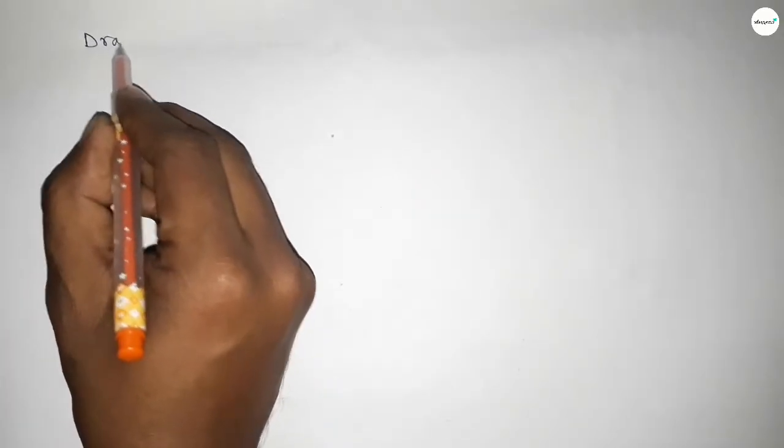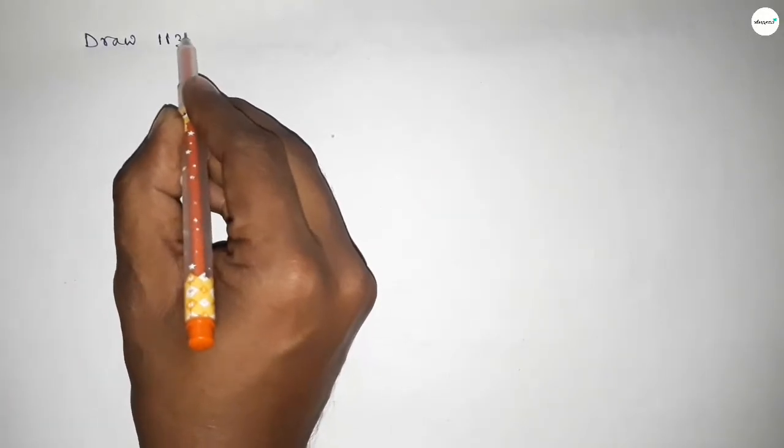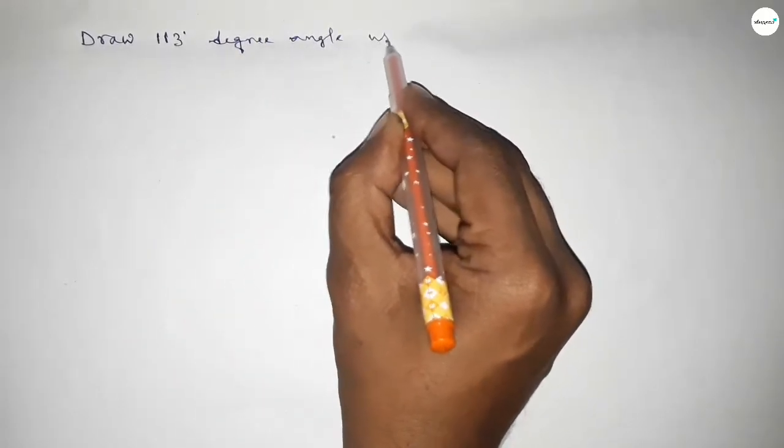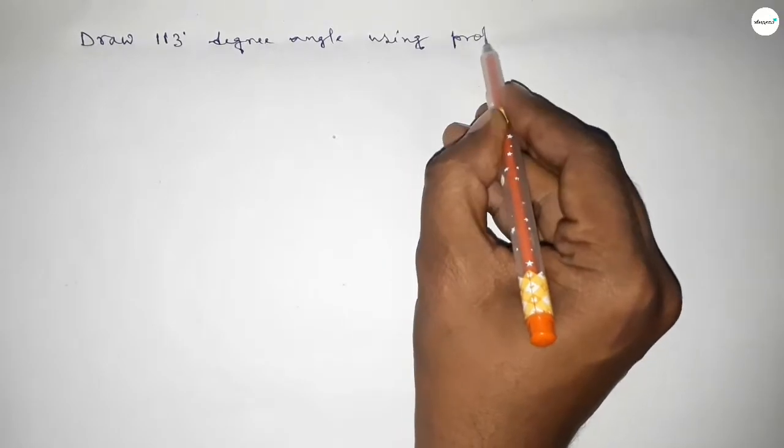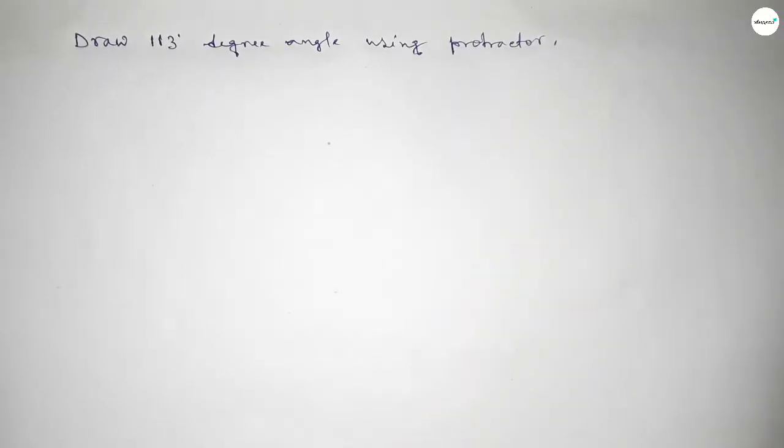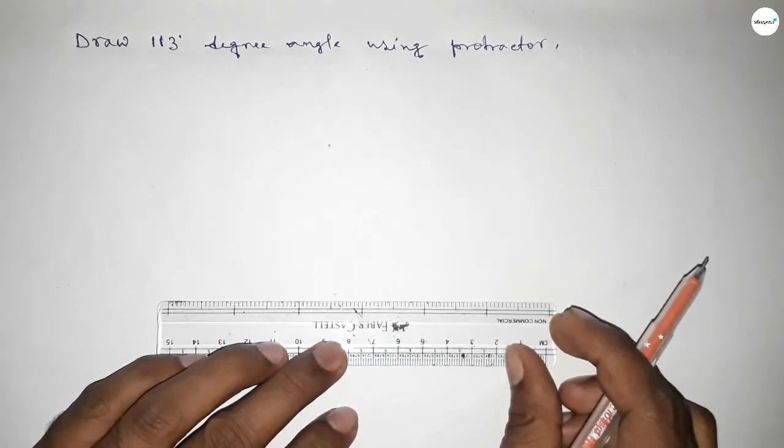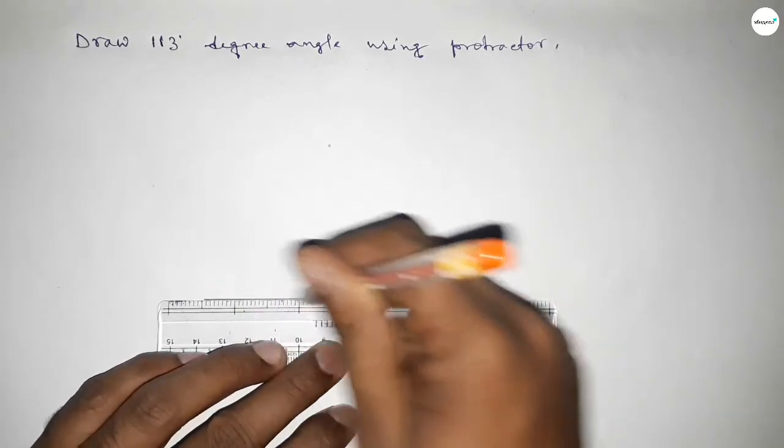Hi everyone, welcome to SI Share Classes. Today in this video we have to draw a 113 degree angle by using a protractor. So let's start the video. First of all, we have to draw here a straight line of any length.